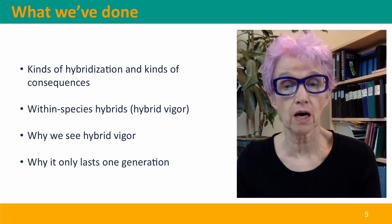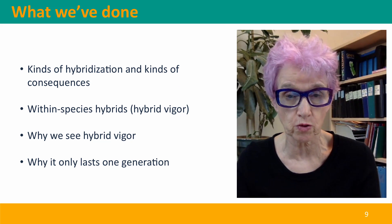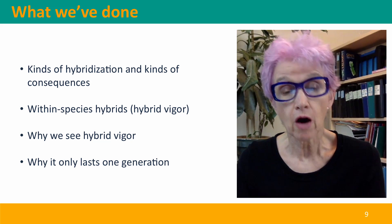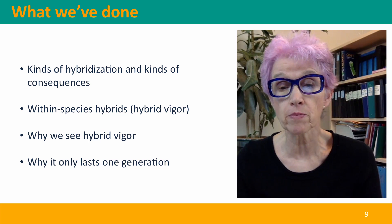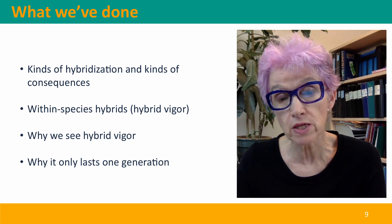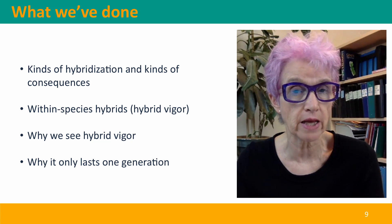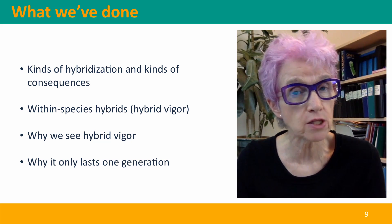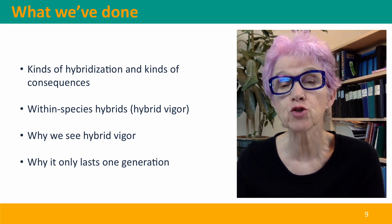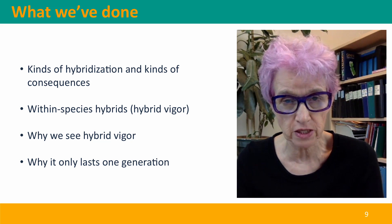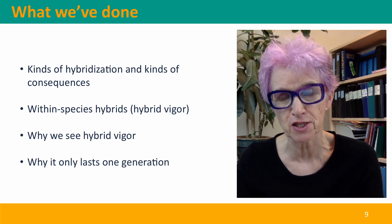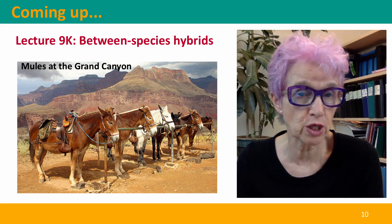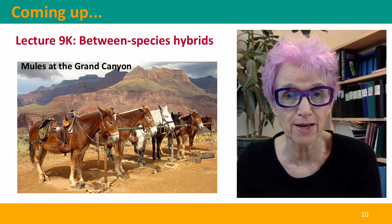So we've introduced different kinds of hybridization and their different consequences, and then thought in detail about the consequences for within-species hybrids — most dramatically the phenomenon of hybrid vigor. We talked about why hybrid vigor only lasts one generation and decays into a population with very mixed phenotypes, using the analogy of Mendel's F2 generation. Coming up next, we're going to talk about between-species hybrids. The photo shows an example of mules at the Grand Canyon — I hope to see you there.